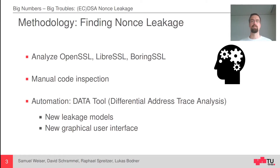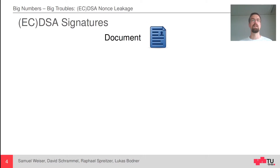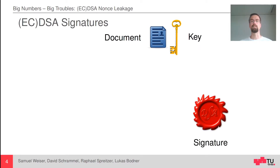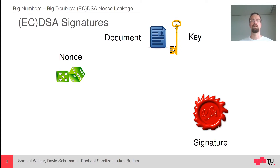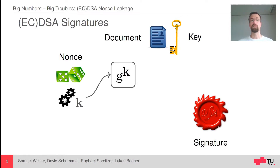Let's step back and look at what ECDSA signatures are. We always have some form of document or data structure which we want to sign with a signature key, shown in yellow here, and out comes a digital signature. ECDSA signature schemes always involve a so-called nonce — a number only used once. It needs to be secret; this is very important. As soon as we know a few bits of the nonce, we can mount a key recovery attack and retrieve the yellow key. We start off with nonce generation, and the nonces are denoted as k in this presentation. The next steps for ECDSA are exponentiation, inversion, and the final multiplication step.